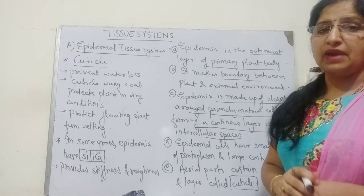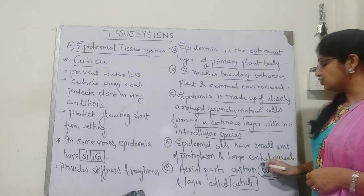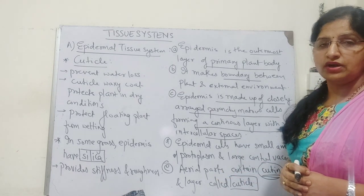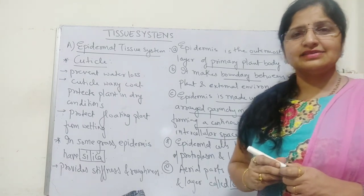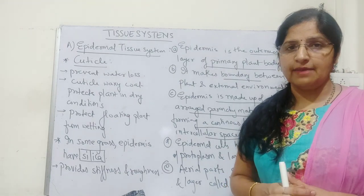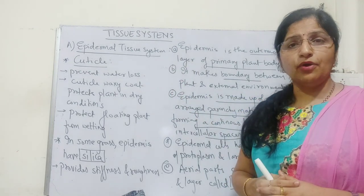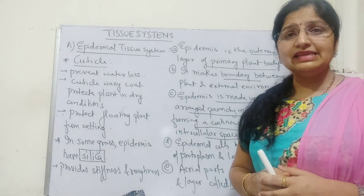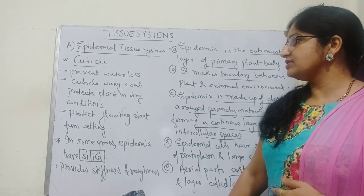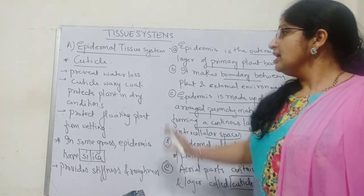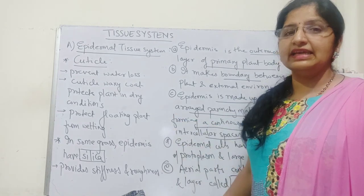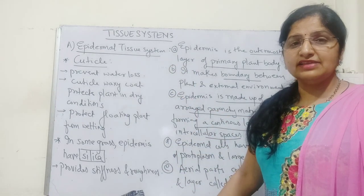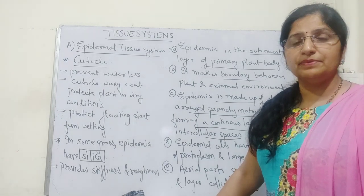In many aerial parts of the plant body, epidermal cells show deposition of a chemical called cutin, and this cutin deposit layer is called the cuticle. Cuticle is a very important characteristic feature of xerophytic plants or plants growing in dry habitats, because it prevents water loss and reduces excess transpiration. Cuticle sometimes also releases a waxy coating that protects aquatic floating plants from getting wet, making them unwettable.